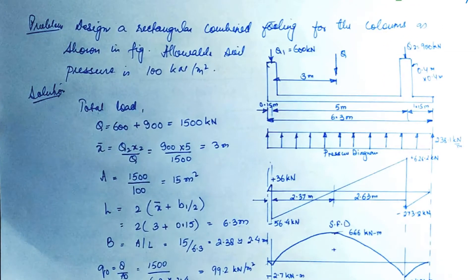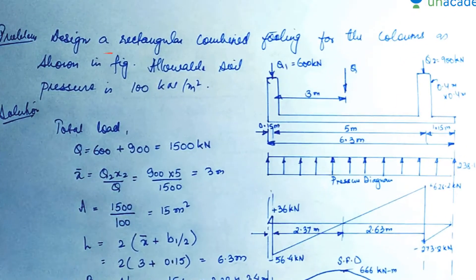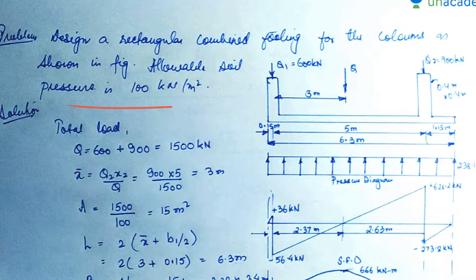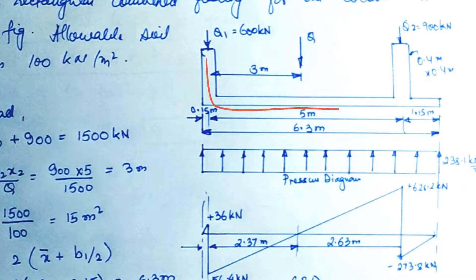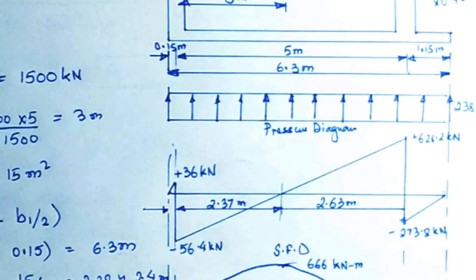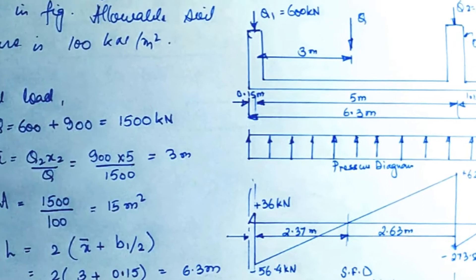Now let's solve a real example. Design a rectangular combined footing for two columns as shown in the figure. The allowable soil pressure is 100 kN/m². The first column carries a load of 600 kN and the second column carries a load of 900 kN. The center-to-center distance between the columns is 5 meters.